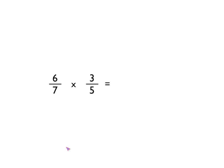Remember what I said? You literally just have to times the numerators together and times the denominators together, as you can see here. So 6 times 3 and 7 times 5.